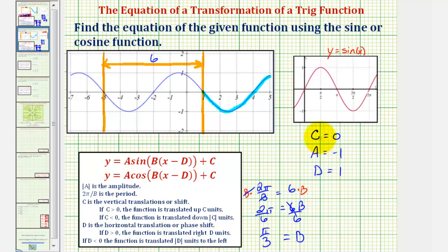So now that we know c, a, d, and b, we can now write our equation. We would have y equals, a is negative 1, so we could write negative 1 times sine, or just negative sine, of b, which is pi over 3, times the quantity x minus d, so we have times the quantity x minus 1, and then c is 0. So this equation would give us the graph of our blue function.